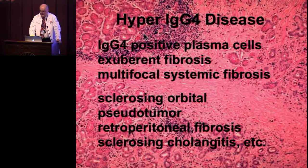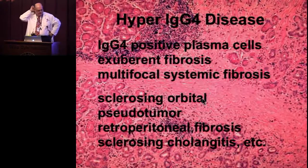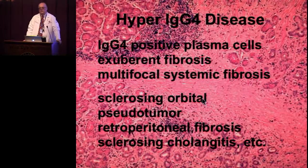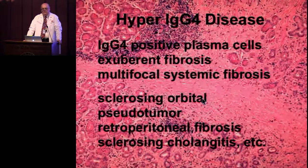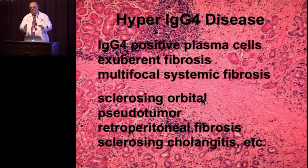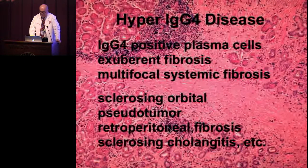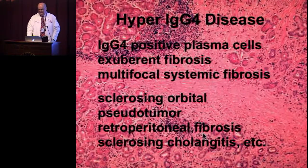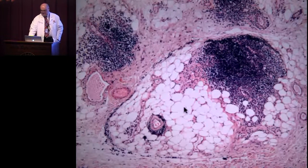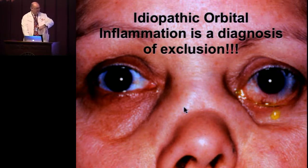Hyper-IgG4 disease involves IgG4-positive plasma cells leading to exuberant fibrosis and multifocal systemic fibrosis. The criteria for making the diagnosis are currently somewhat unclear, and these patients can have retroperitoneal fibrosis and sclerosing cholangitis. This shows involvement of the orbital fat and perivascular lymphocytic infiltration with fibrosis. Idiopathic orbital inflammation remains a diagnosis of exclusion.